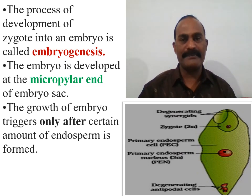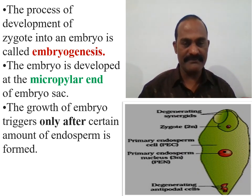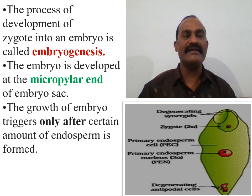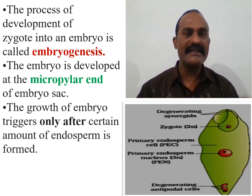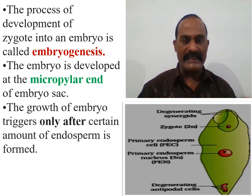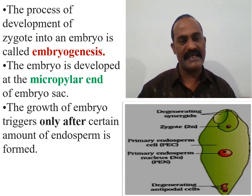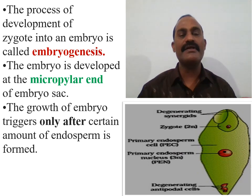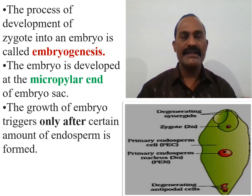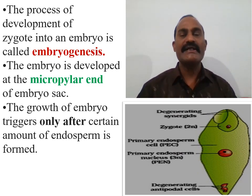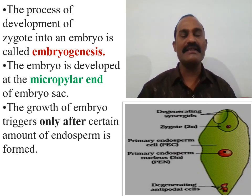This embryo develops at the micropilar end of the embryo sac, because the egg apparatus containing the ovum lies at the micropilar end. So it is quite obvious that the development of embryo is at or near the micropyle, that is the micropilar end of the embryo sac. Importantly, the growth of the embryo is triggered only after a certain amount of endosperm is formed, so the nutrient tissue must be available from the very beginning.